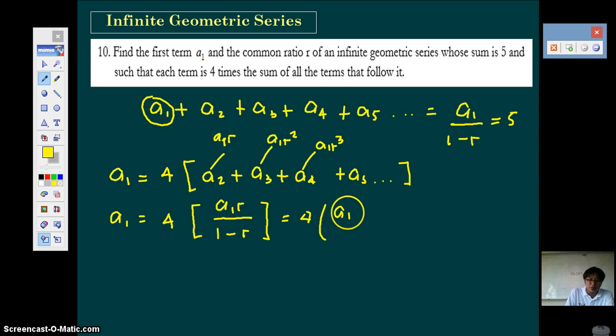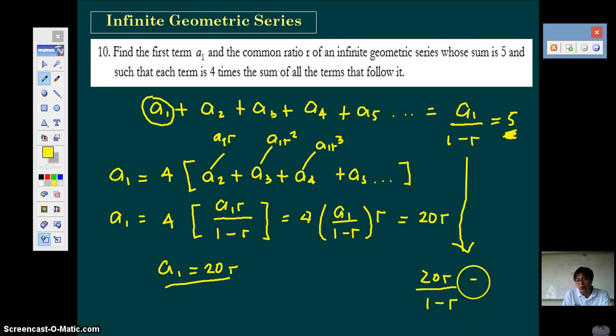I'll write it again: 4 times a1 over 1 minus r times r. So a1 over 1 minus r is this, and we know that this one is 5. So this can be now written as 20r. So a1 is 20r. So using this, we can substitute 20r to a1 here. So 20r over 1 minus r is equal to 5.